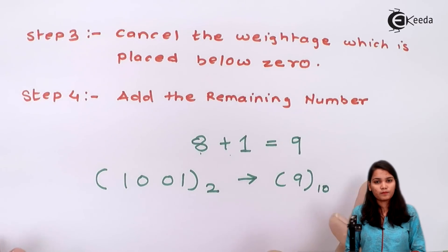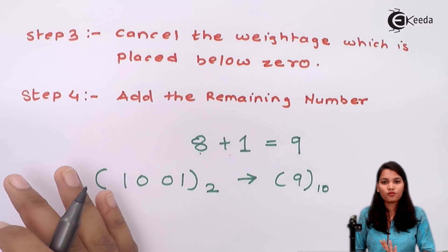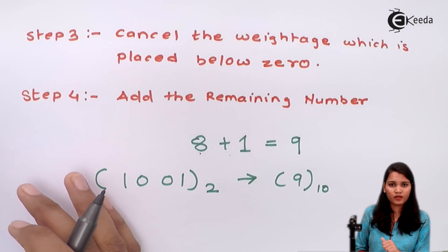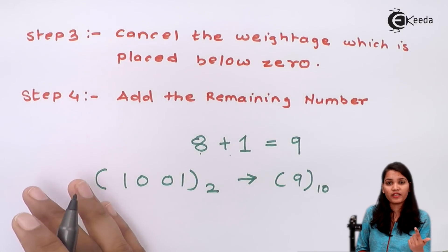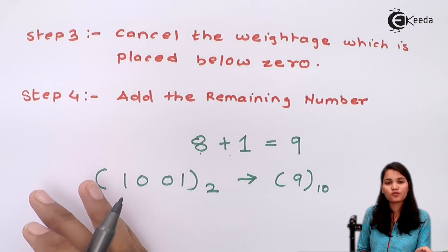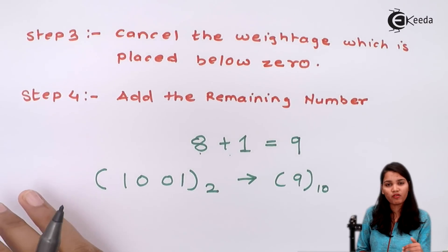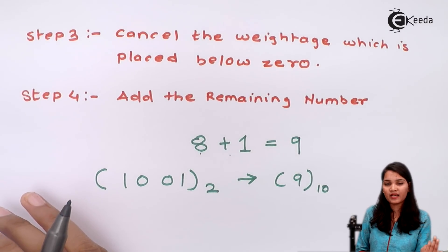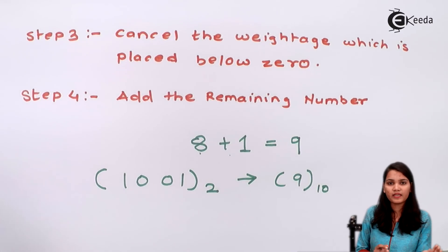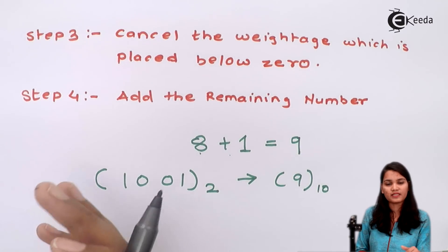Let's sum up this video. We have seen four steps: Step 1 — write the given binary number. Step 2 — write the weightages of the binary digits. Step 3 — cancel out the weightages below the 0 values. Step 4 — add the remaining weightages. This gives us the binary number converted into the decimal number. Thank you for watching today's video. We will see other types of conversions in the next video.